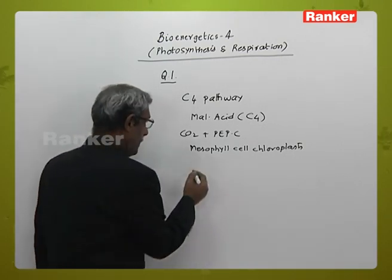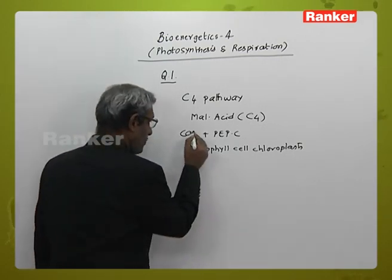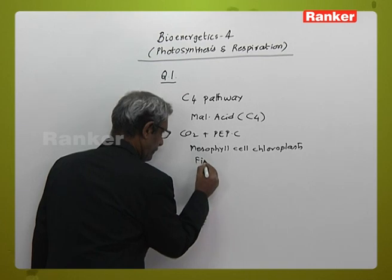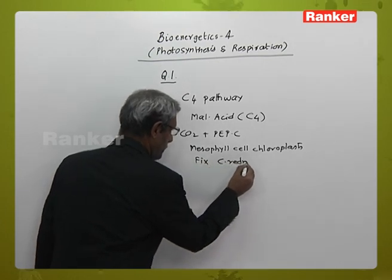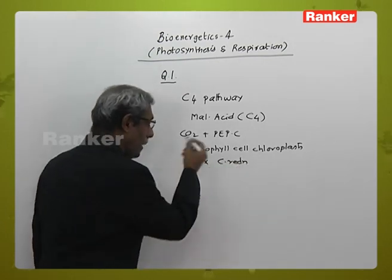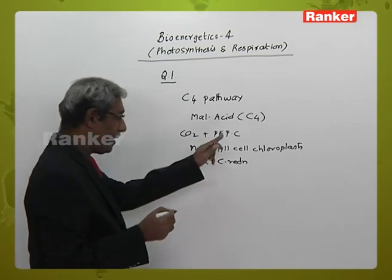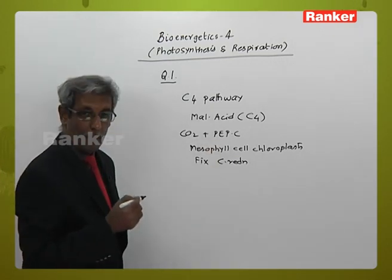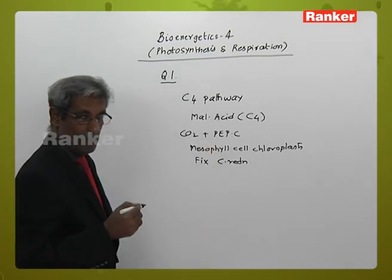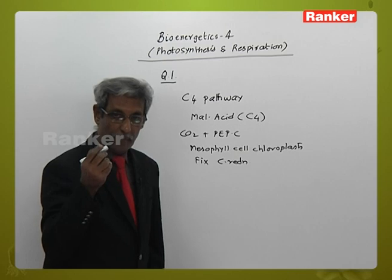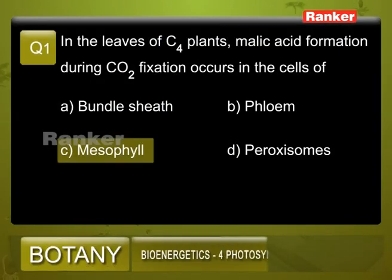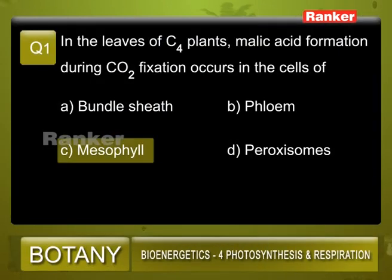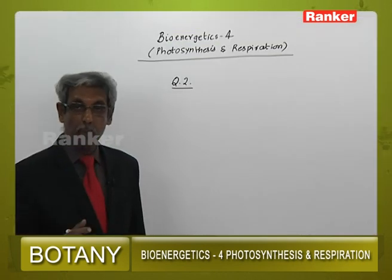This is the place where carbon dioxide is fixed. There is carbon reduction — carbon gets added to form a 4-carbon compound. So among the choices of bundle sheet, phloem, mesophyll, and peroxisomes, the right choice is mesophyll. Hence the answer is C.